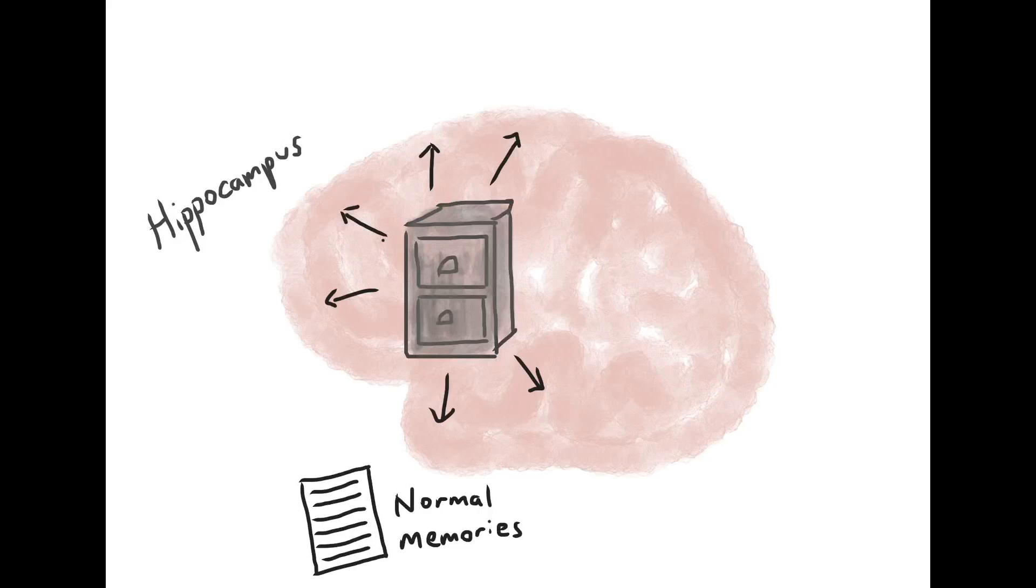Imagine all of this is going through your mind just as you're about to cross over the road, and suddenly you see a truck hurtling down the road towards you. What happens? Well, there's another part of your brain called the amygdala, which is like the brain's alarm system.